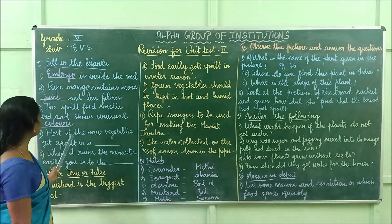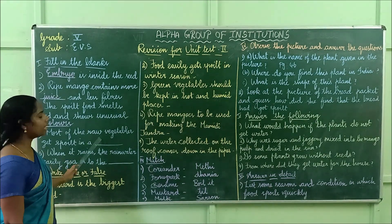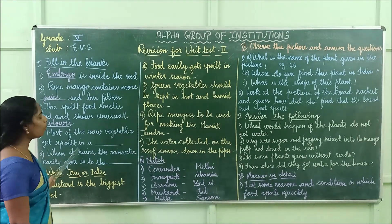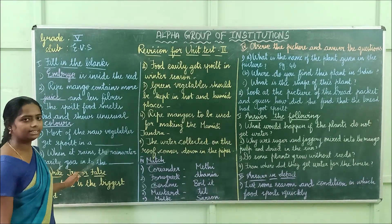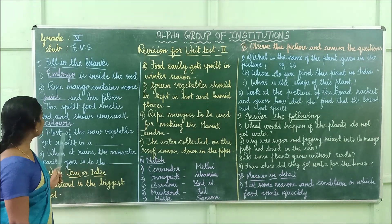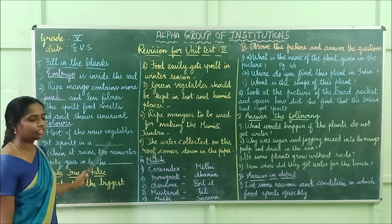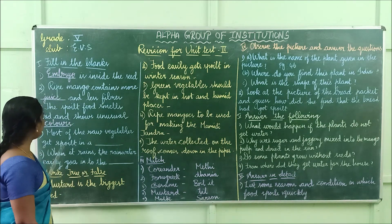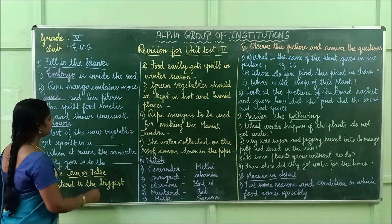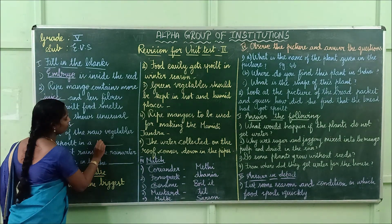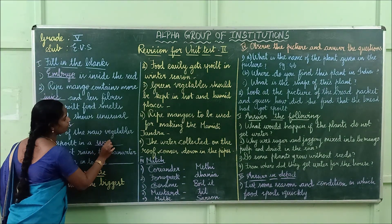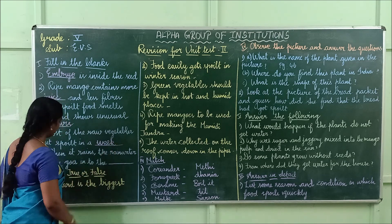Most of the raw vegetables get spoiled in one week. The spelling of week is W-E-E-K.